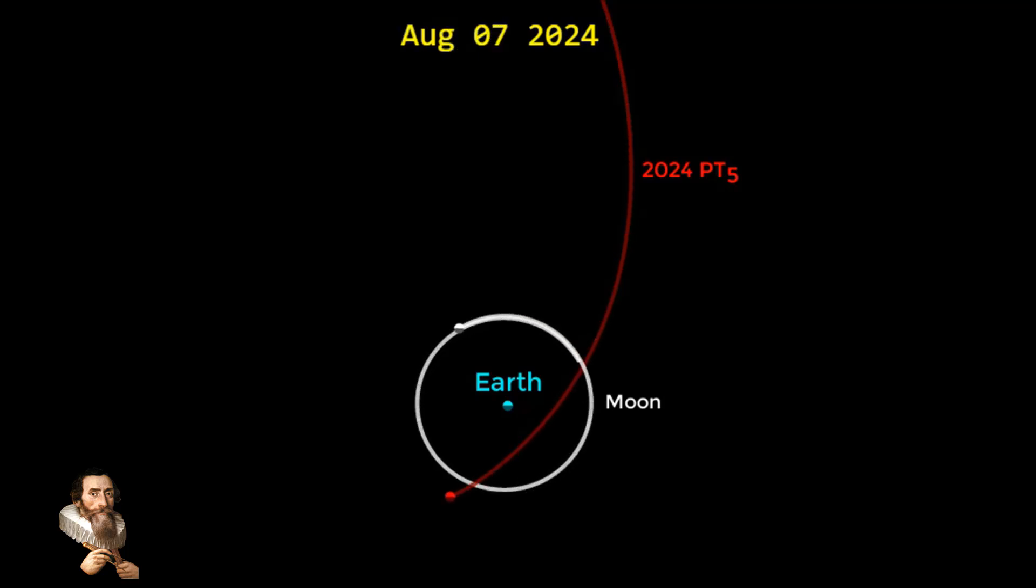Asteroid 2024 PT5 was only just discovered on August 7th of this year by the Asteroid Terrestrial Impact Last Alert System, also known as ATLAS, from the observatory in South Africa.